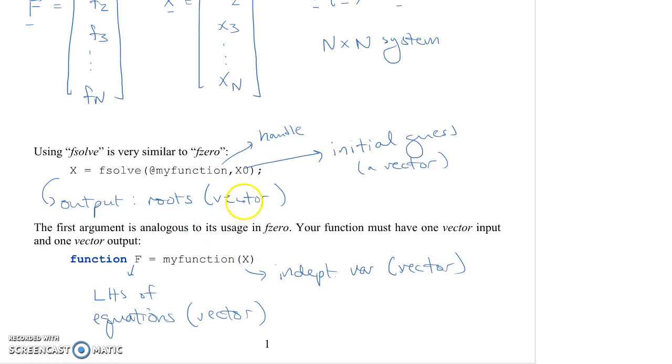Now, of course, you don't have to write it this way. You could have the input variable be capital Y or lowercase y. You could have the output variable be capital G or little f, or whatever you want it to be. But this is just typically how it's done: capital F equals my function of capital X, or capital Y sometimes.